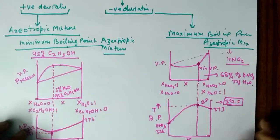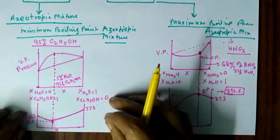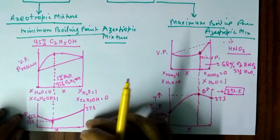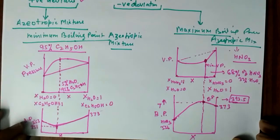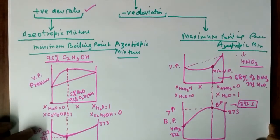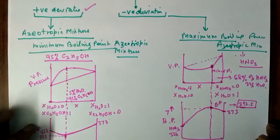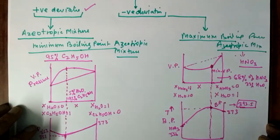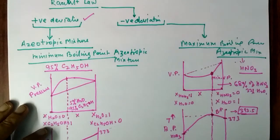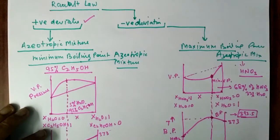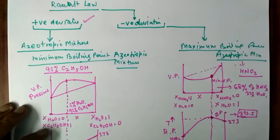In the case of positive deviation, the minimum boiling point azeotropic mixture is found. In our next class, we shall take colligative properties and how those properties are demonstrated by solutions. Thank you for watching.